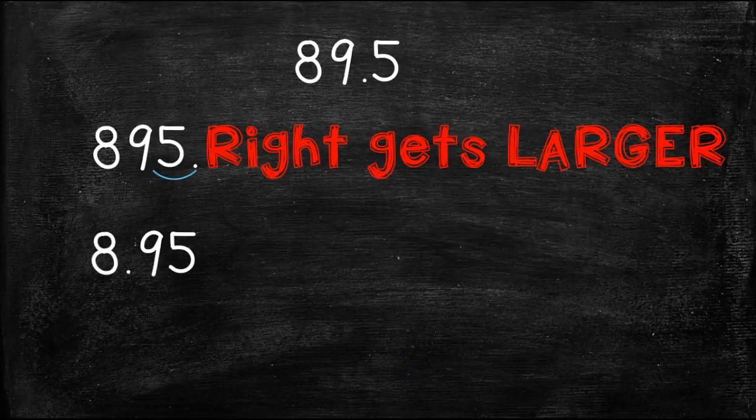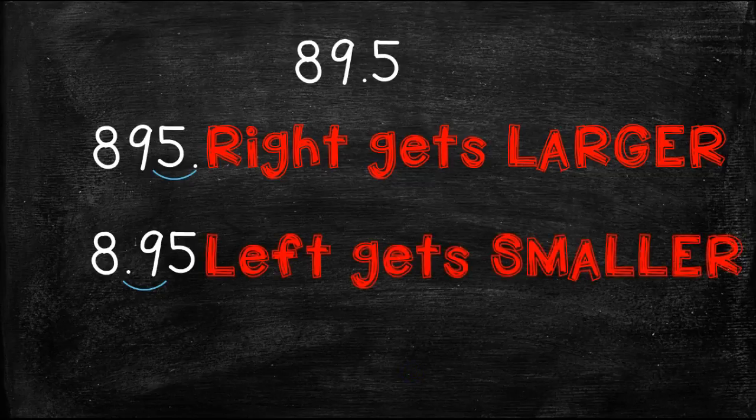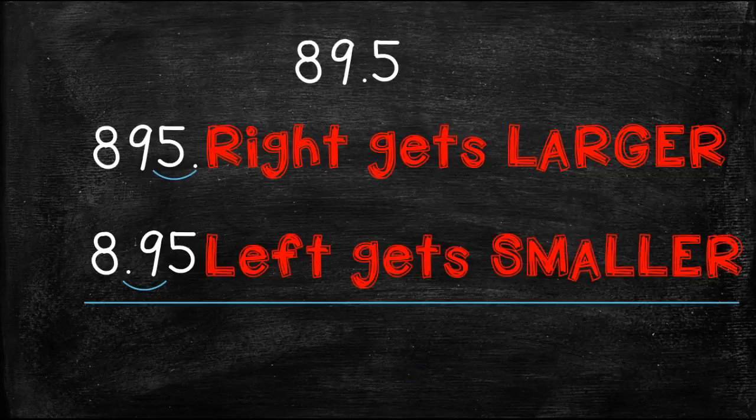So if we move the decimal one point to the left, we have 8 and 95 hundredths. Is 8 and 95 hundredths smaller than 89 and 5 tenths? It is. So if we move the decimal to the left, the number gets smaller. This is exactly what we want to do when we are dividing by tens, one hundredths, or 1,000.